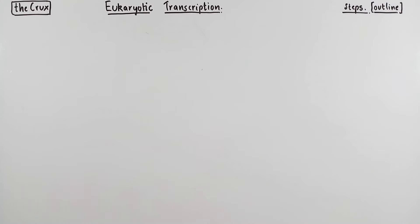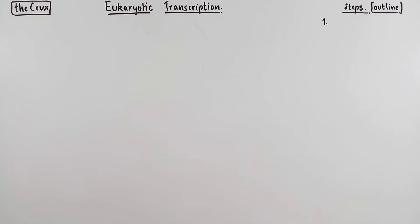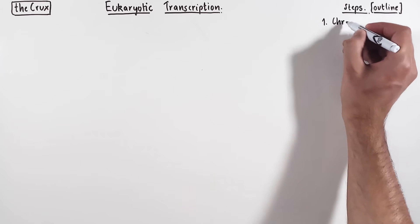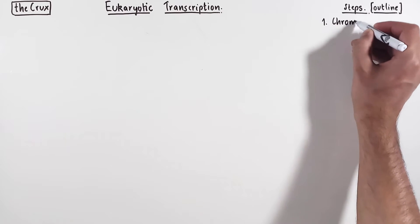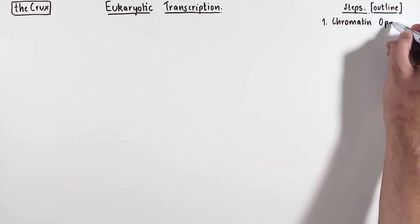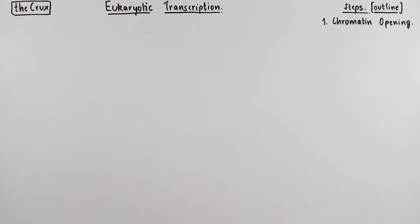I want to build our understanding of eukaryotic transcription in some key steps, and we will follow this outline for the coming videos. There are eight steps that will hone in the idea of eukaryotic transcription. First, we will discuss the problem of chromatin opening, which the eukaryotic genome has to solve before beginning the process of transcription.